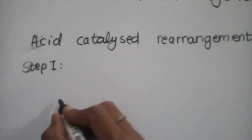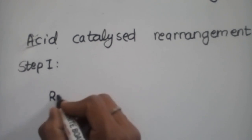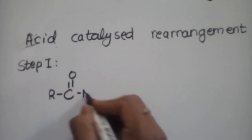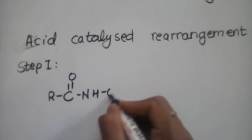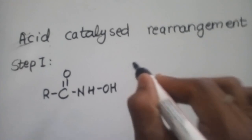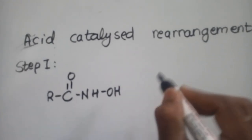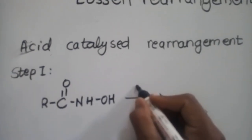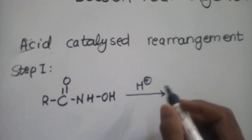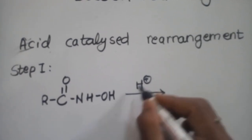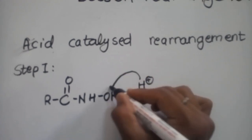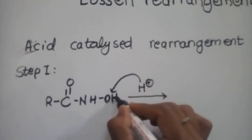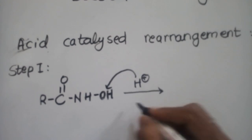In the acid-catalyzed rearrangement, first we take the hydroxamic acid with an acid catalyst. For hydrolysis, we use an acid. This acid attacks the OH group of the hydroxamic acid and removes the water molecule.